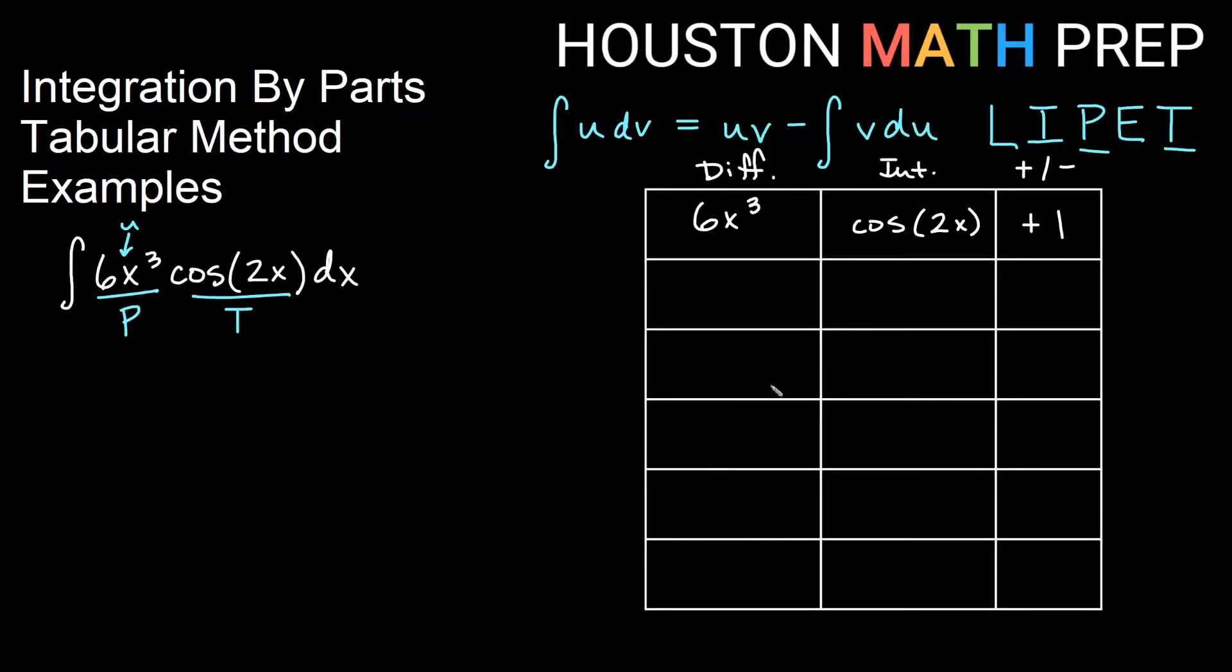Let's go ahead and differentiate. That will determine how far down the table we need to go. So power rule, three comes out, I'll get 18x². Power rule again, two comes out, I get 36x. We just get x, and then derivative of that is 36. And derivative of a constant is zero. So I know that I don't really need anything below zero in my table, so I can go ahead and stop once I get there.